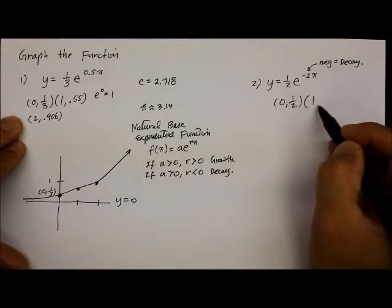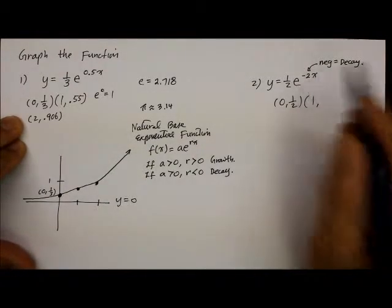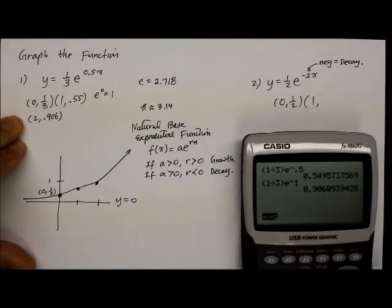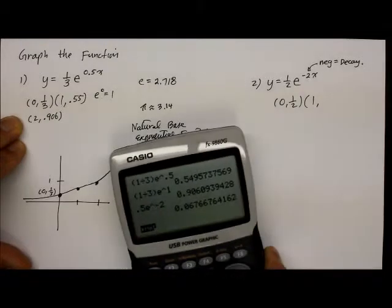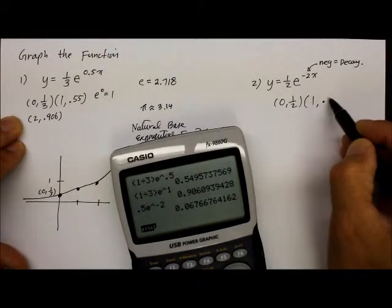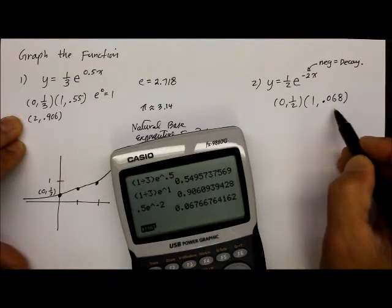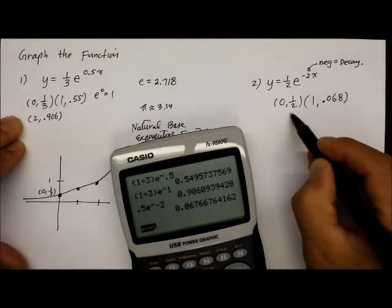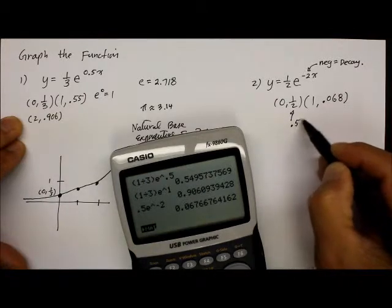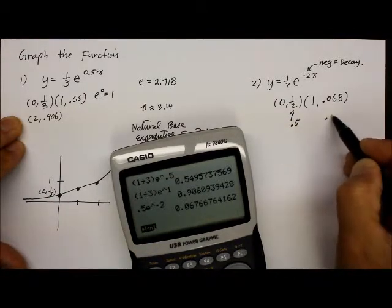But what if we let x equal one this time? It's getting ugly. Break out the calculator again. Let's figure this one out. We have 0.5, because that's one-half, times e raised to negative two times one, or simply negative two. That gives me 0.067, or 0.068 if I round it up.